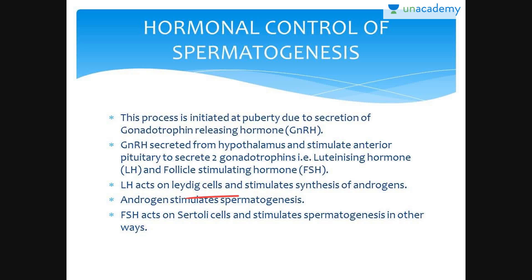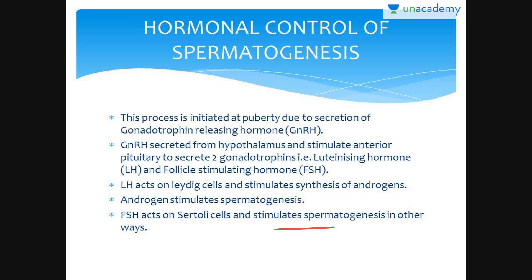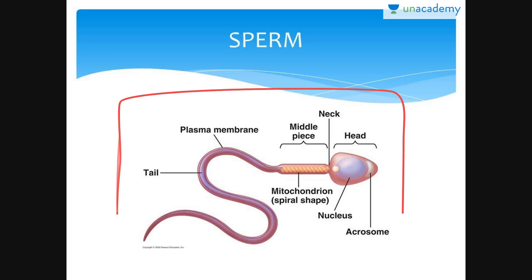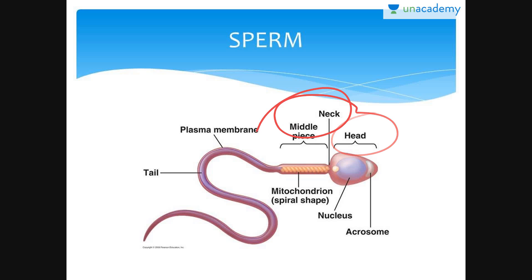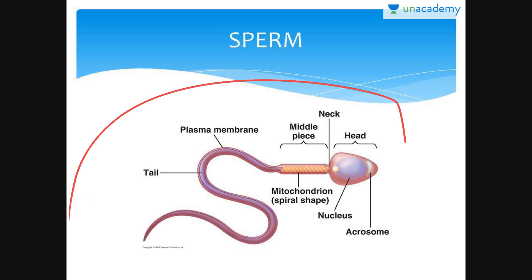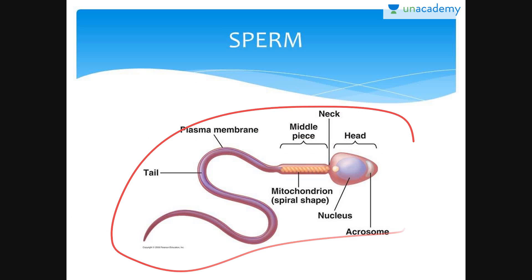LH acts on Leydig cells and stimulates synthesis of androgens, which then stimulate spermatogenesis. FSH acts on Sertoli cells and stimulates spermatogenesis in other ways. The ultrastructure of sperm consists of a head, neck, middle piece, and a tail. The whole body of the sperm is surrounded by a plasma membrane.